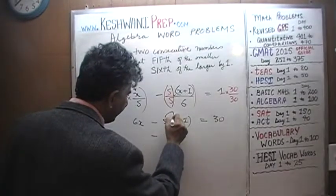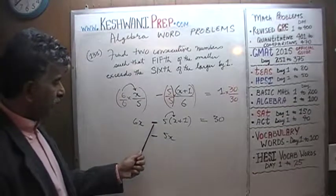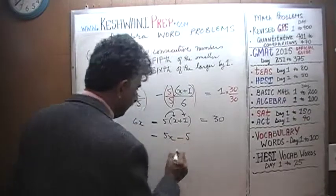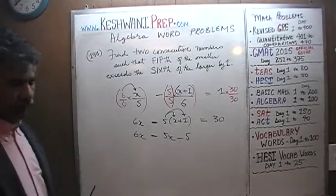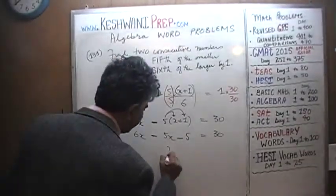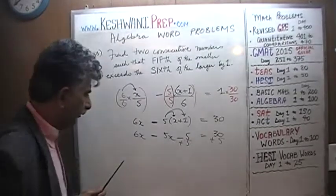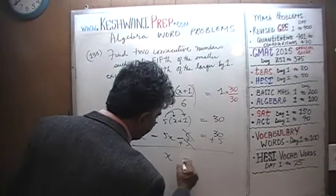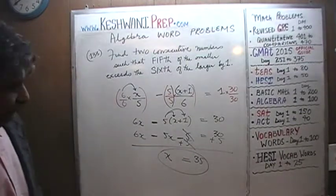Let's expand: 5 times x is 5x. Remember there is a negative outside, so it's distributed throughout — negative times positive is negative, and 5 times 1 is negative 5. This is where most people make a careless mistake. So we have 6x minus 5x minus 5 equals 30. That simplifies to x minus 5 equals 30. Adding 5 to both sides gives x equals 35.